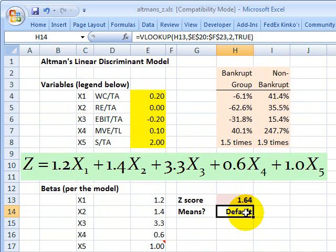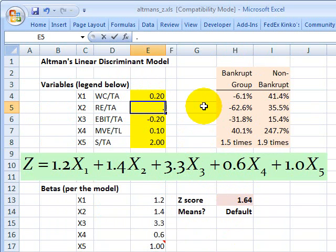So for example, if let's say we just increased this retained earnings to total assets up to 0.5, the z-score would then be 2.34 and we'd be in the zone of ignorance. And if I increased it even more to 1.0, we'd be in the no default zone.